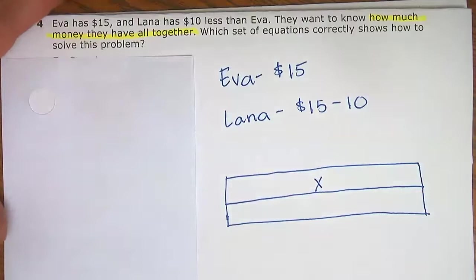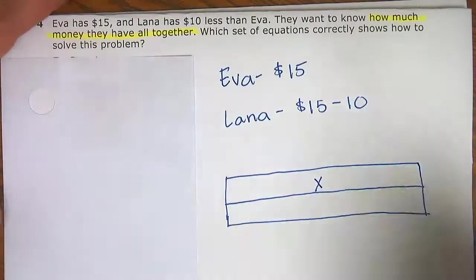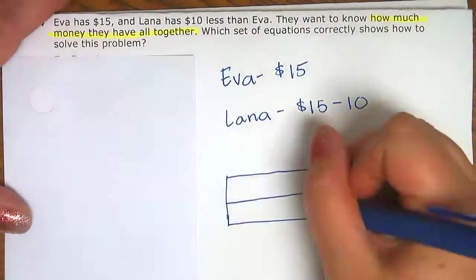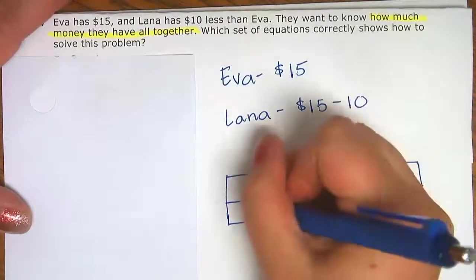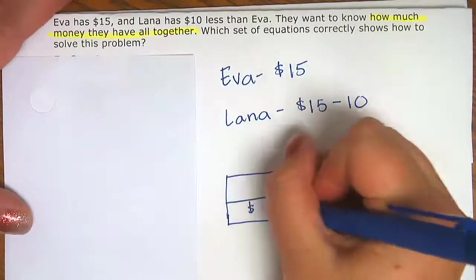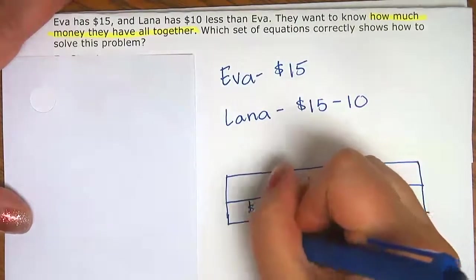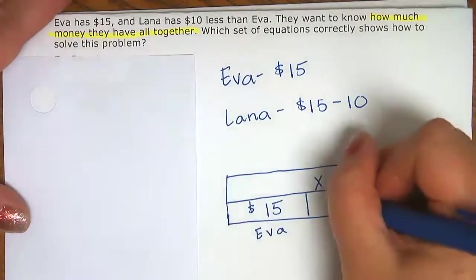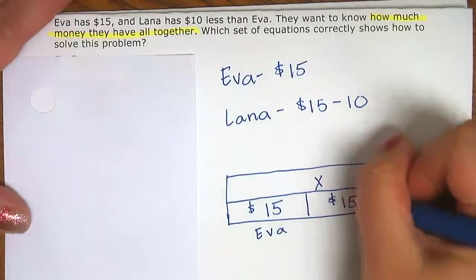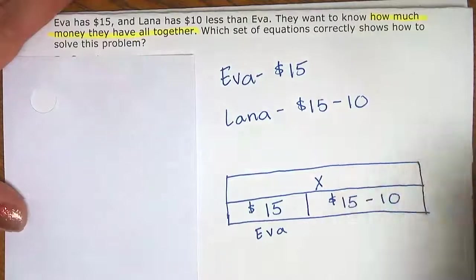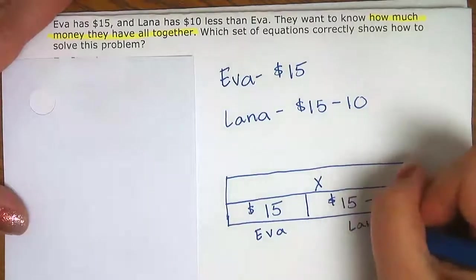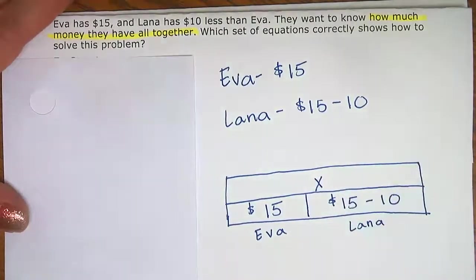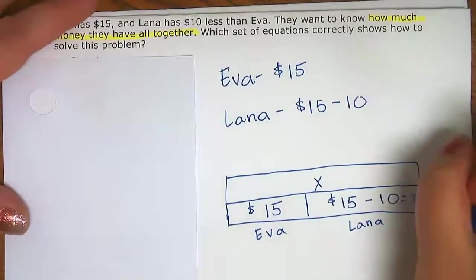Then we have Eva at $15 — you can always write their names under it to keep track. And Lana is 15 minus 10. Let's solve that: what is 15 minus 10? Five.